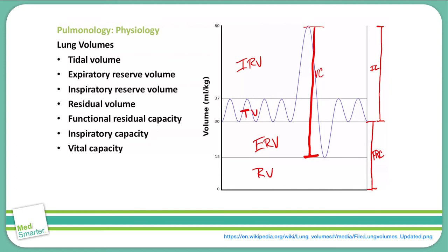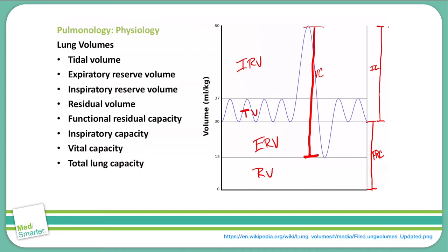The final calculation is the total lung capacity, calculated by adding together the inspiratory reserve volume, the expiratory reserve volume, the tidal volume, and the residual volume. It represents the entire curve from top to bottom — that is our total lung capacity.